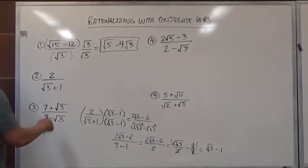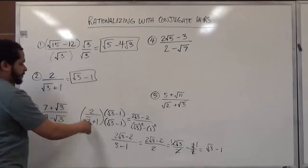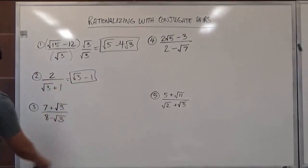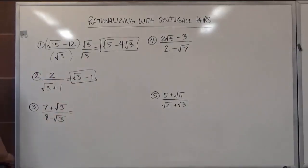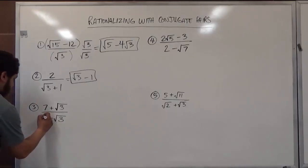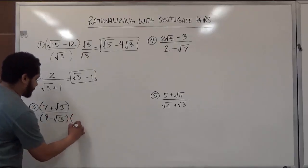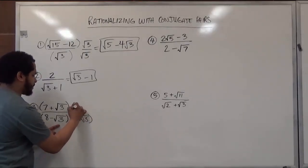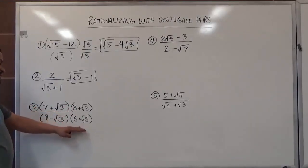So 2 over radical 3 plus 1 becomes radical 3 take away 1 after conjugating the denominator. Make sure you rewind and watch what I just did to see the notes on how to get each of these solutions. Let's work the next one out. We'll start by conjugating the denominator again, because we're rationalizing the denominator. The conjugate pair of 8 take away radical 3 is 8 plus radical 3. We're going to do this to the top and bottom.